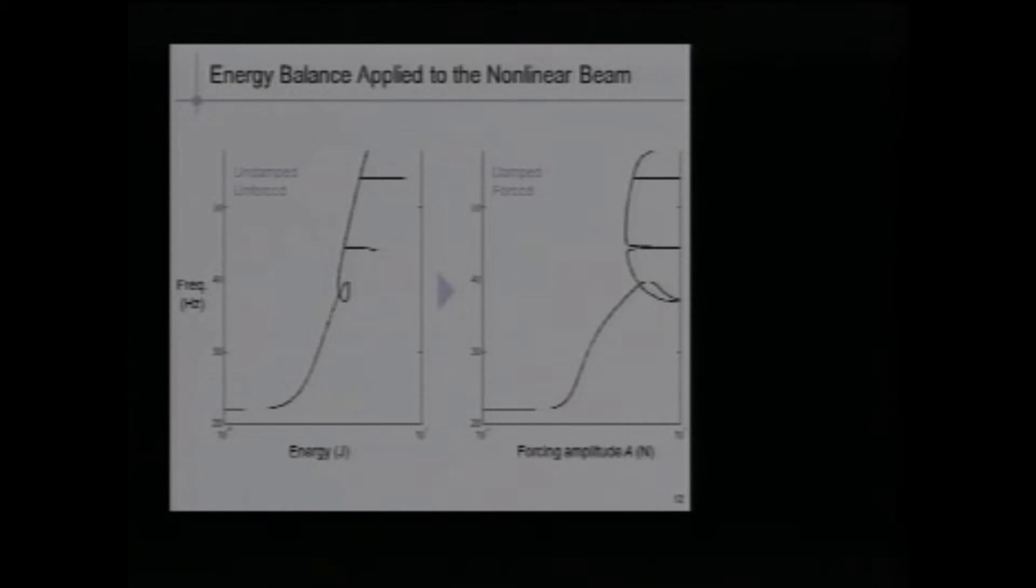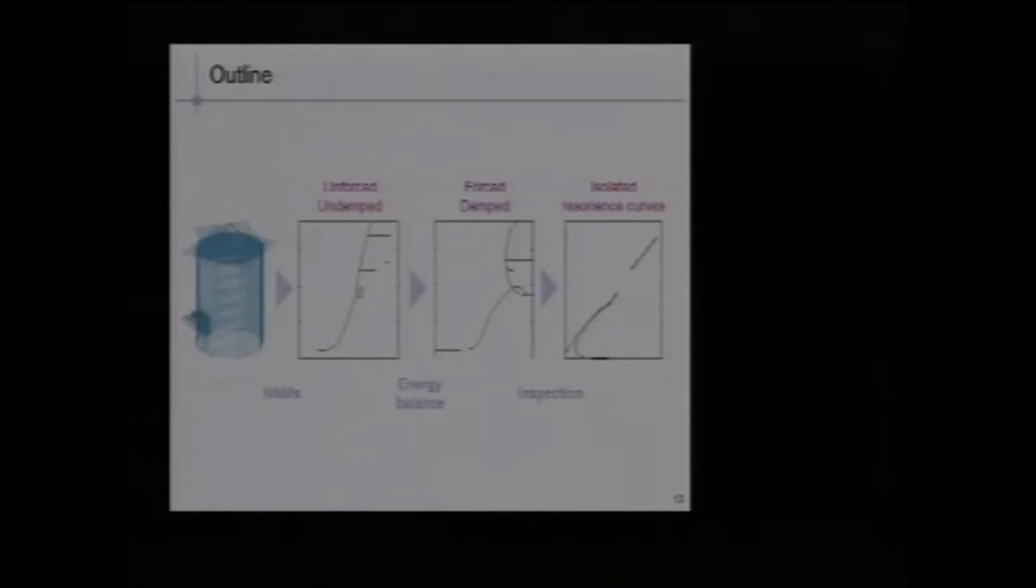If we know the damping matrix, if we know the nonlinear normal mode, we know the harmonic forcing, we can directly estimate the force we need to excite the mode. Using this energy balance, we can transform this plot into that plot. Undamped and forced into damped forced. Here you see that if you want to excite the nonlinear normal mode at 30 Hertz, you have to apply forcing amplitude equal to this value.